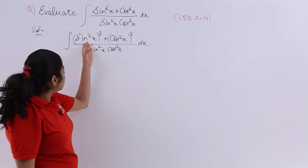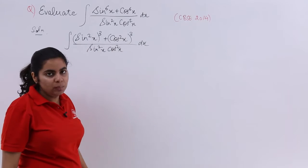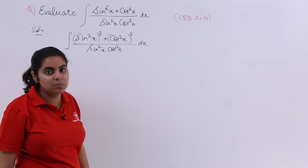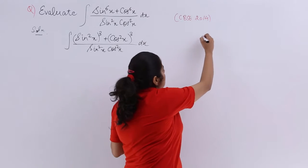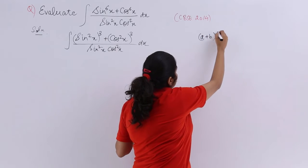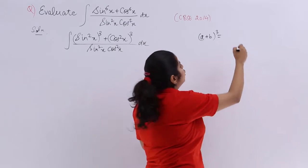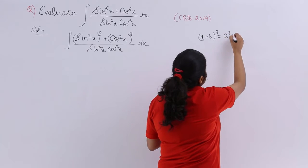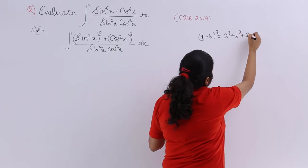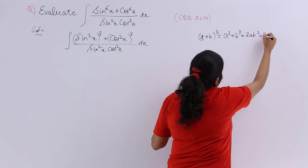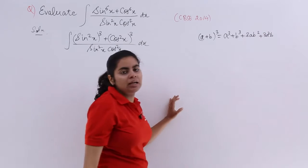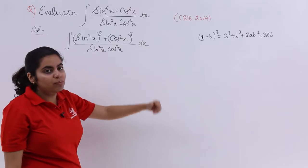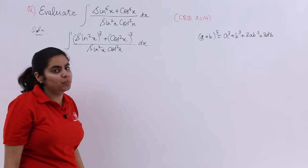Now this can be treated as a cube plus b cube. What is the formula of a cube plus b cube? I already know my a plus b whole cube is equal to a cube plus b cube plus 3a square b plus 3ab square. So I will be using that formula and obtaining the value of a cube plus b cube.